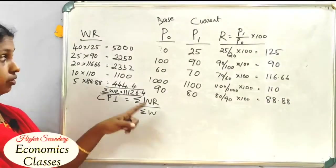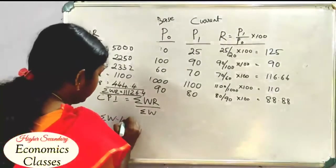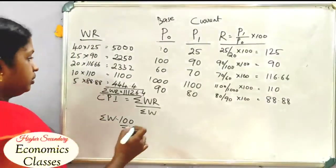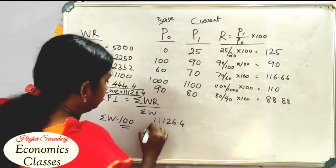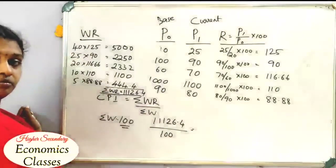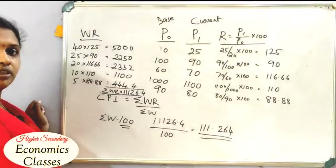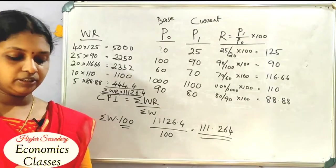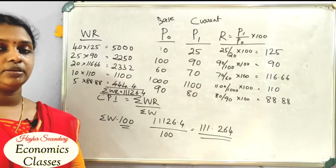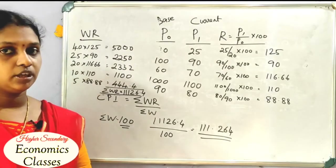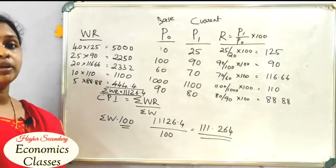ΣW = 100. We add all the WR values. The answer for CPI is divided by 100, giving the final Consumer Price Index. That is the method for the Consumer Price Index.